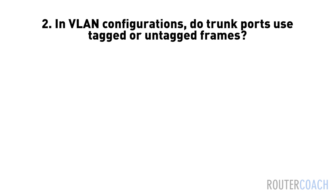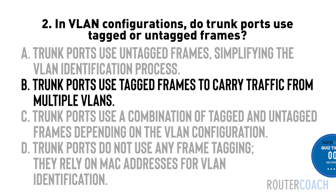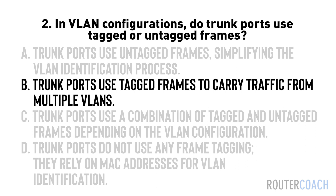Question two: In VLAN configurations, do trunk ports use tagged or untagged frames? A — trunk ports use untagged frames, simplifying the VLAN identification process. B — trunk ports use tagged frames to carry traffic from multiple VLANs. C — trunk ports use a combination of tagged and untagged frames depending on the VLAN configuration. D — trunk ports do not use any frame tagging; they rely on MAC addresses for VLAN identification. The answer is B. Trunk ports use tagged frames to differentiate and carry traffic from multiple VLANs over a single physical link, enabling switches to maintain VLAN information as frames traverse the trunk link.